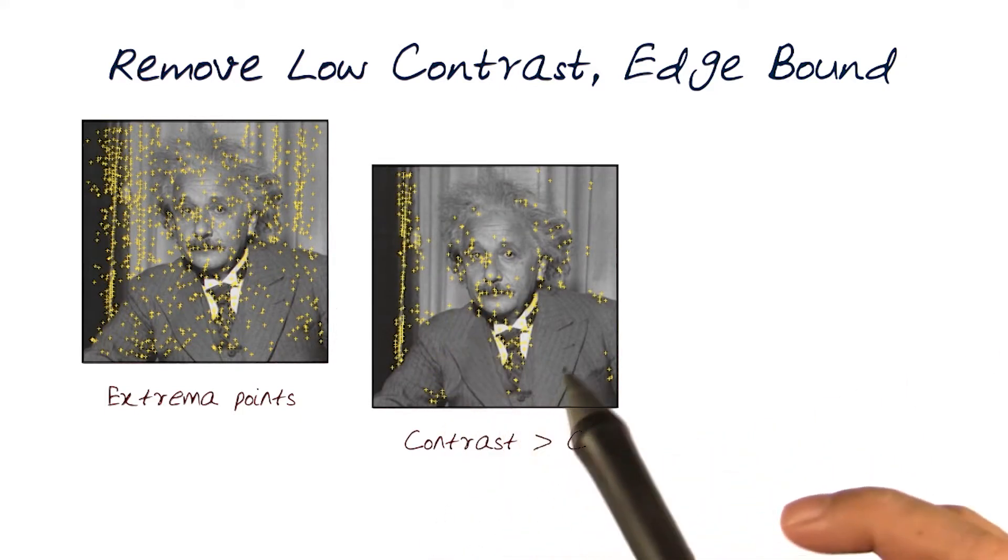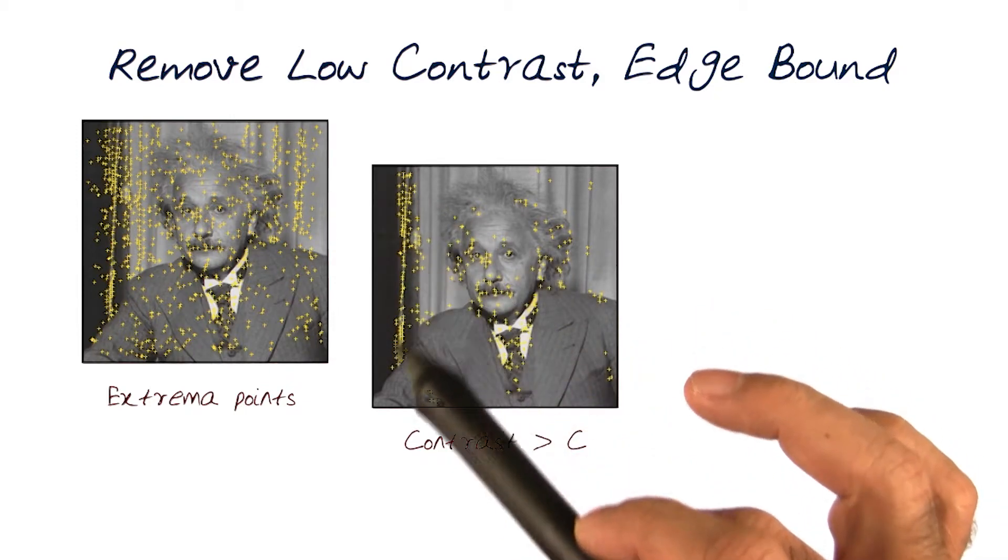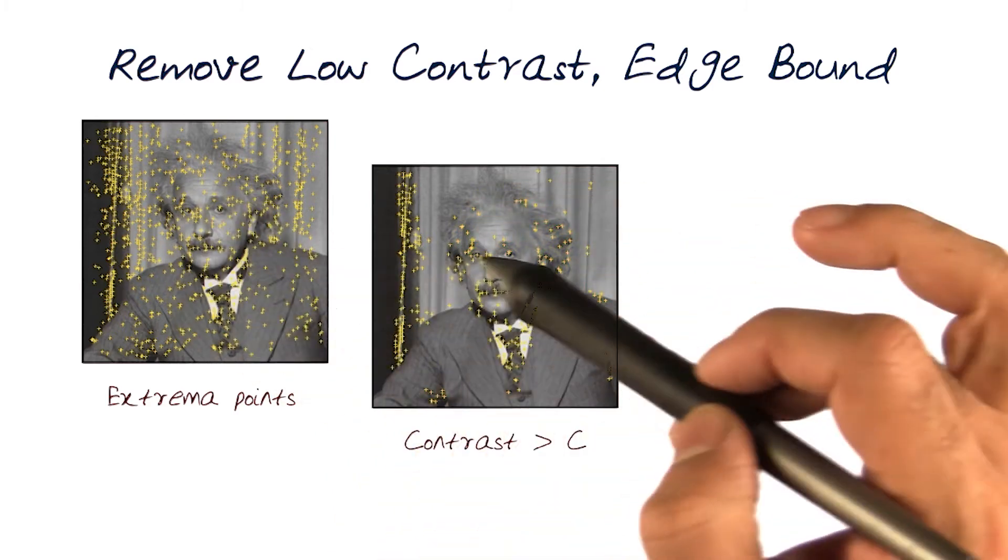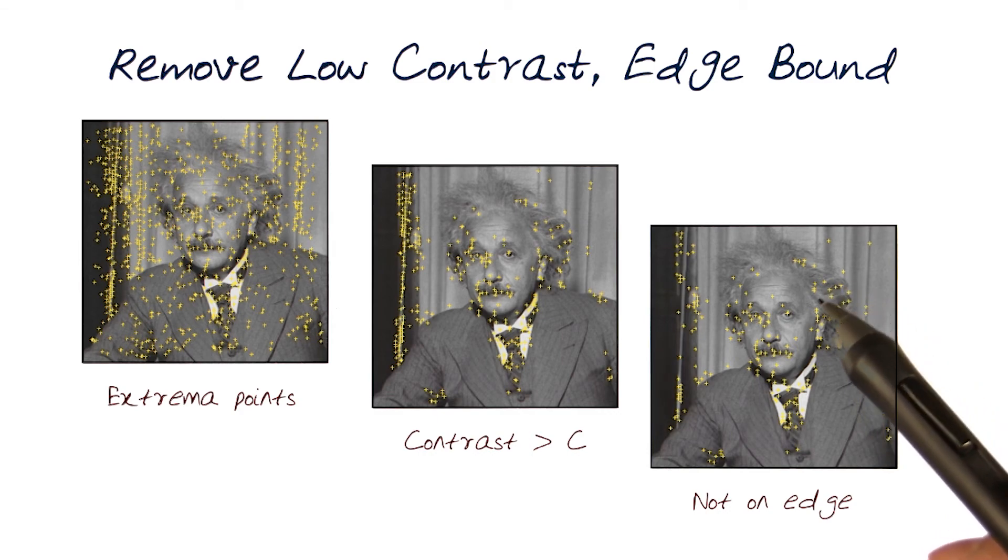It starts giving me more features. There's a lot more features here, and now I've started reducing them. Then I get rid of all that are not edges, just the corner features. I get even fewer points, and this starts giving me the features that I want.